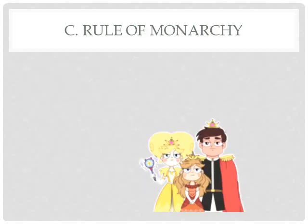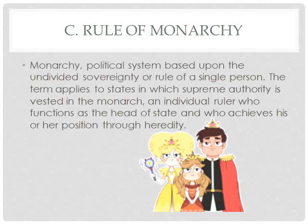Option C is the rule of monarchy. A monarchy is a state ruled by a king or queen — one person who rules the country, and that person comes into power through heredity; they are born into power. Monarchy is a political system based upon the undivided sovereignty or rule of a single person, where supreme authority is vested in the monarch, the head of state. A monarchy is not a sovereign state because it's not the people who rule — it's one person.